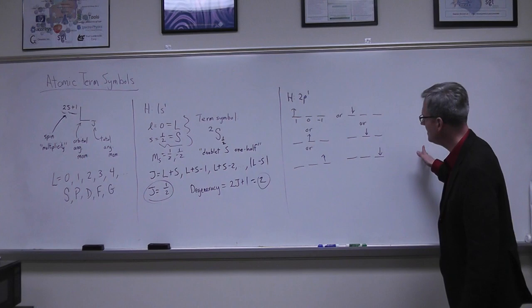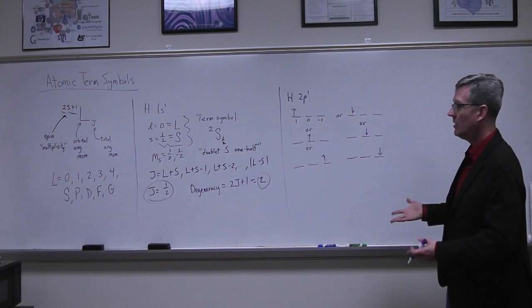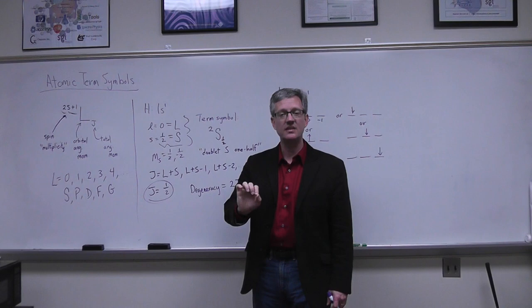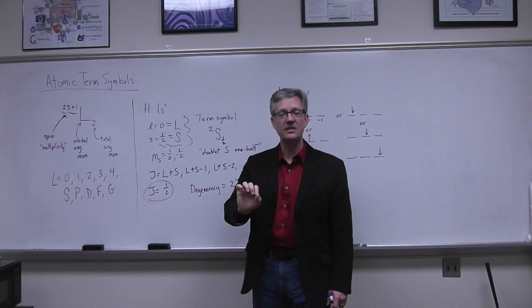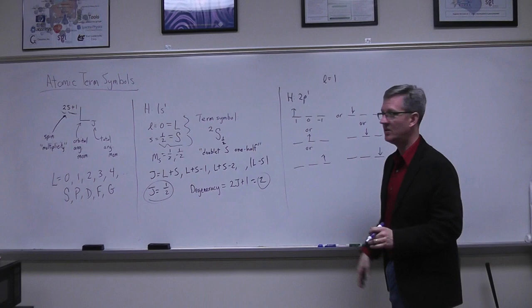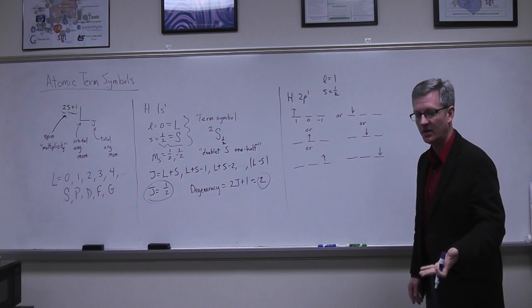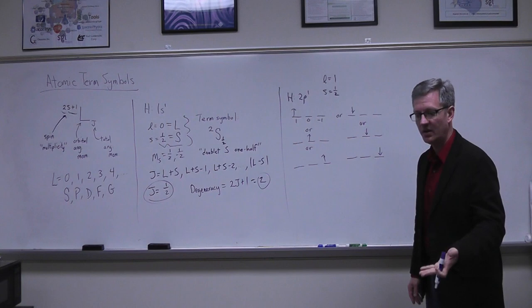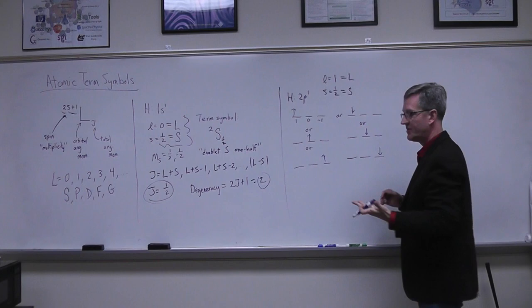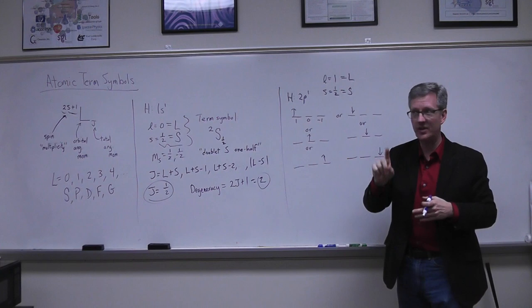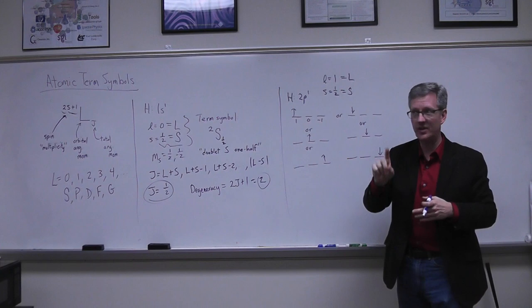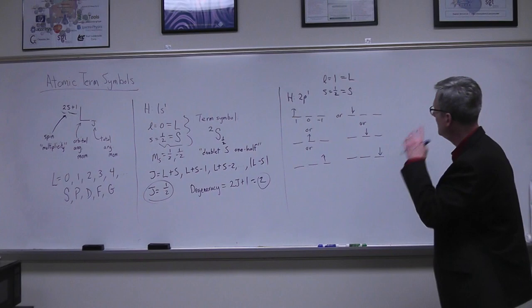For the 2P configuration, little l = 1 (P-type orbital) and little s = 1/2. Since I only have one electron, little l equals capital L = 1, and little s equals capital S = 1/2. The lowercase letters refer to a single electron; capital letters refer to all electrons. Since there's one electron, they must be the same.